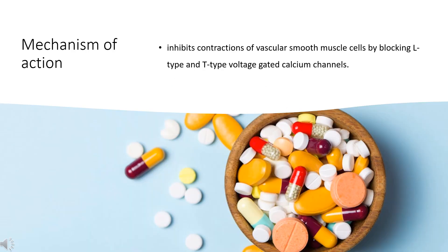Cinnarizine inhibits contractions of vascular smooth muscle cells by blocking L-type and T-type voltage-gated calcium channels. Cinnarizine has also been implicated in binding to dopamine D2 receptors, histamine H1 receptors, and muscarinic acetylcholine receptors.